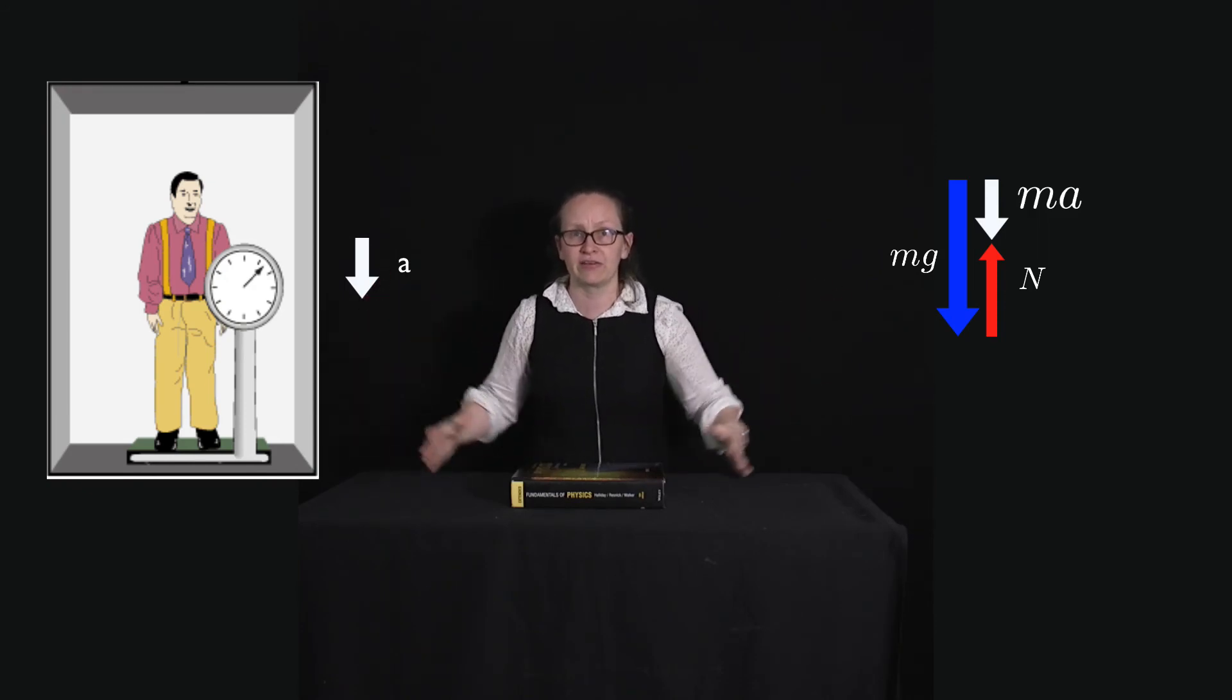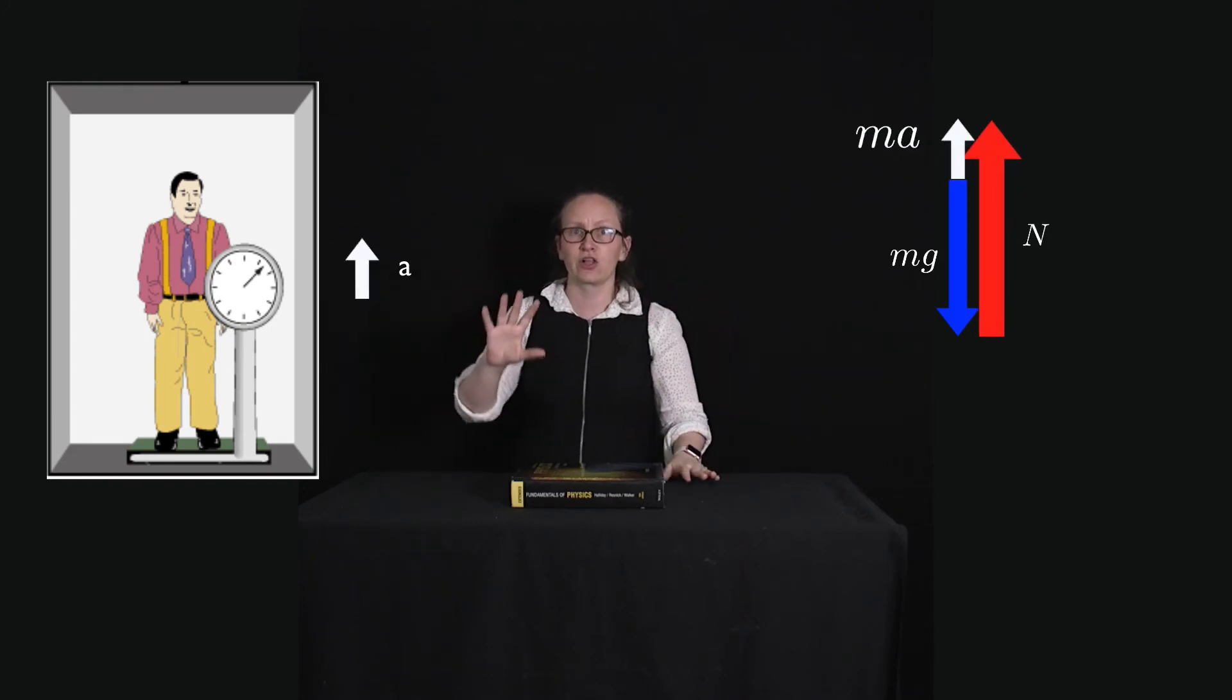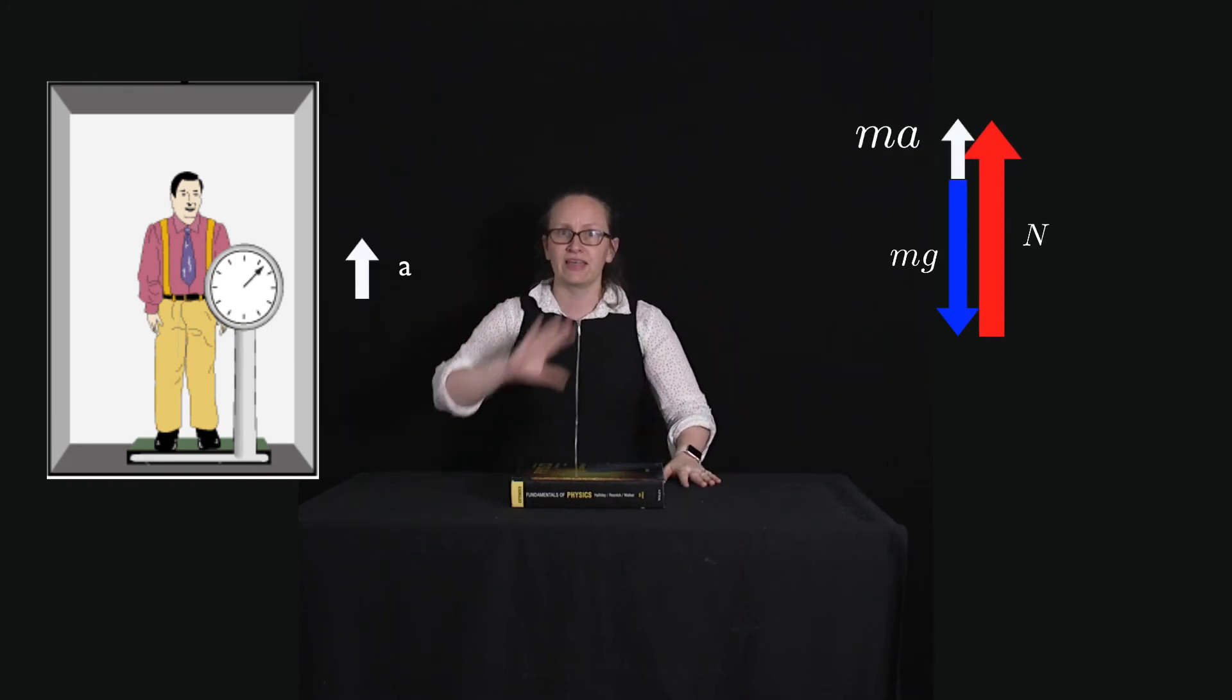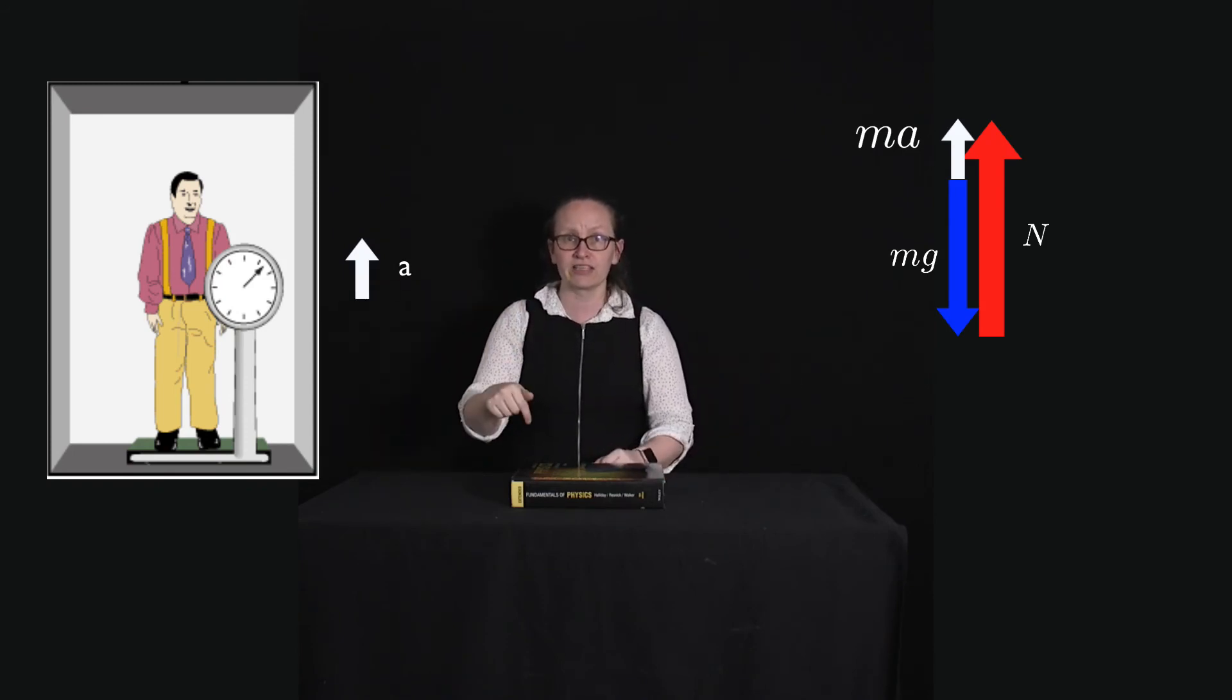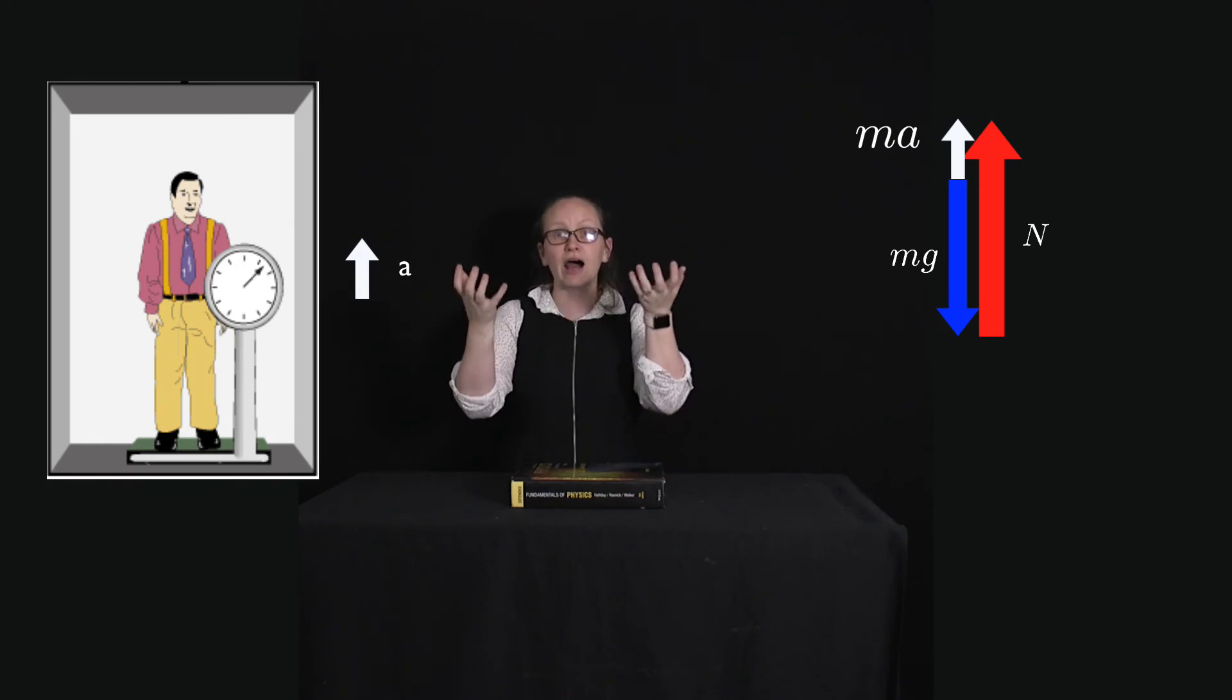If the lift were to be accelerating upwards, so when it gets close to the bottom of the building it needs to slow down. As it's slowing down there is an upwards acceleration. So even though it's moving down the acceleration is still up.